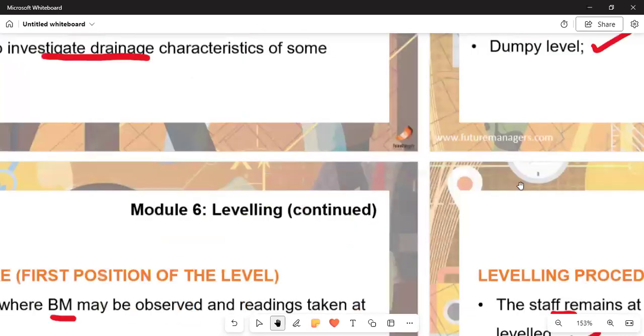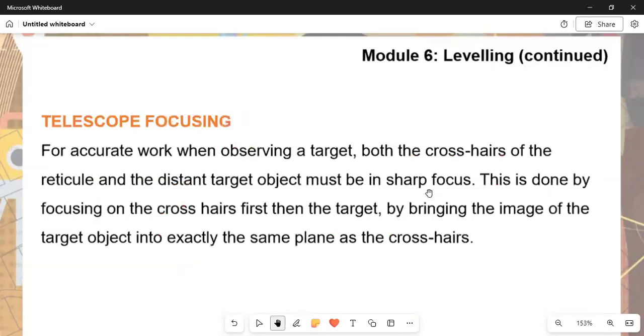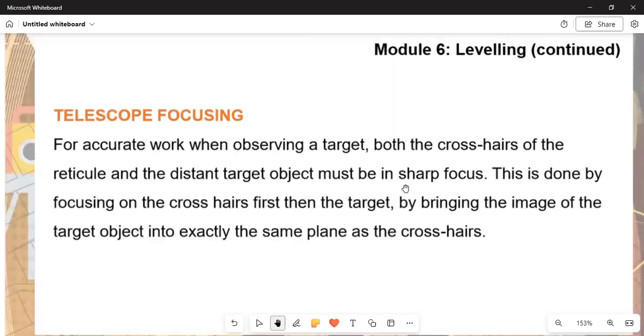We have an important aspect of work in relation to the telescope focusing. We need to understand what this is. For accurate work—the work that is correct by all reasonable doubts—when observing a target, both the crosshairs and the reticule and the distant target object must be sharp in focus. You need a clear line to make this measuring using the telescope focusing. This is done by focusing on the crosshairs first, then the target, by bringing the image of the target object into exactly the same plane as the crosshairs. That is for four marks.